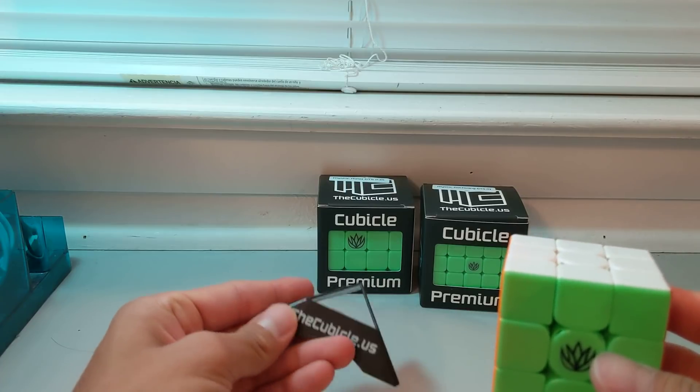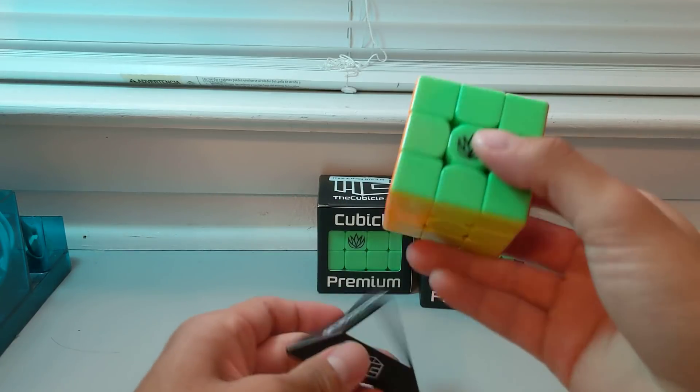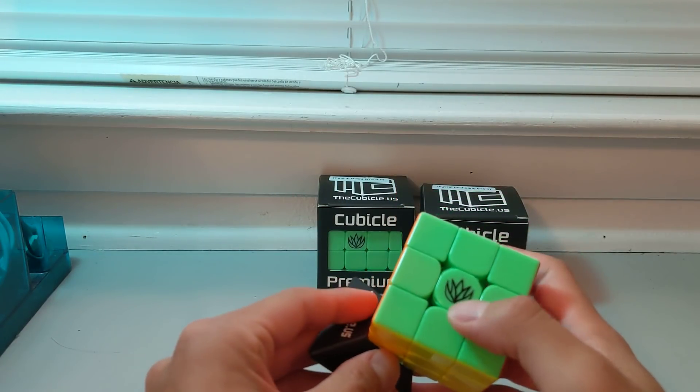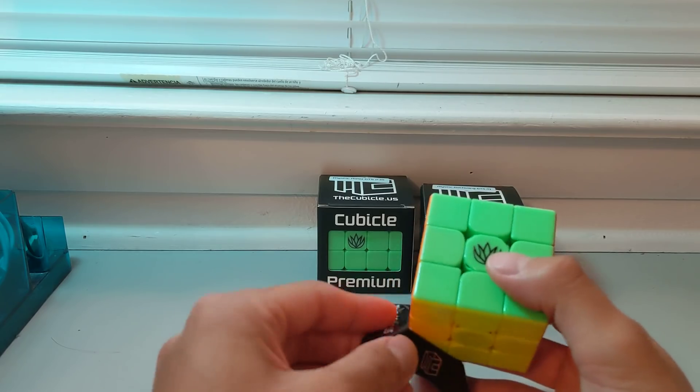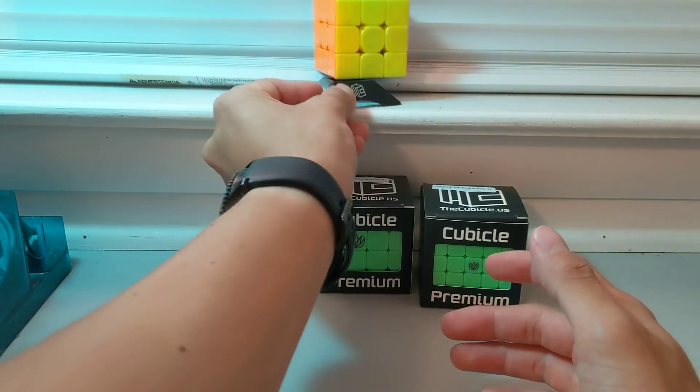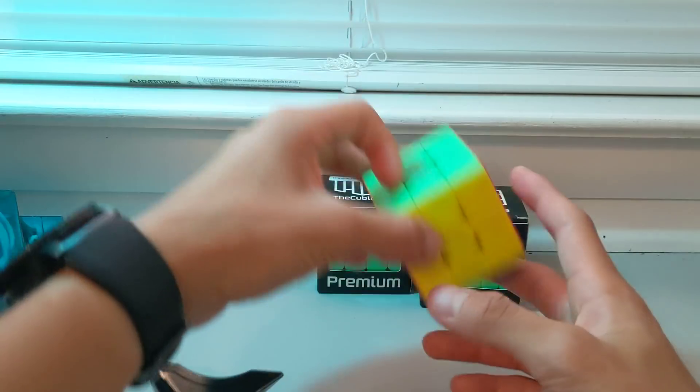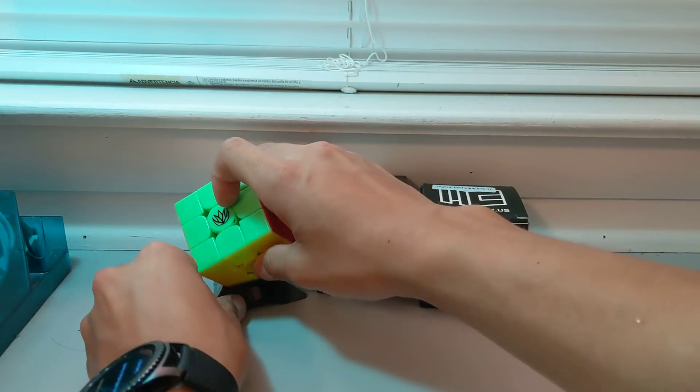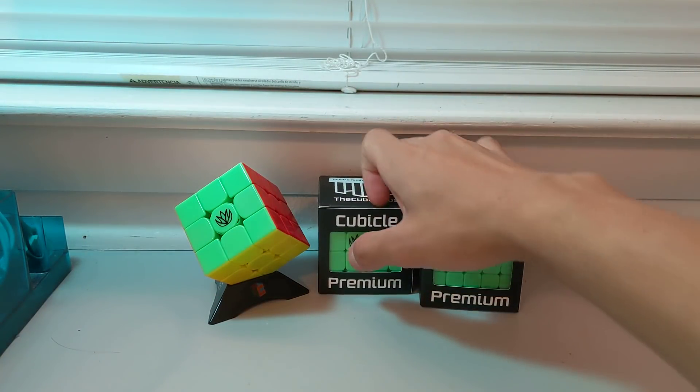I didn't know that they came with stands. It still says cubicle.us, but that's okay. I like how the logo is on green. I used to have an old Angstrom GTS 3M where the logo was moved from red to green. So I'll feel right at home and comfortable with this thing. Let's take a look at the other two.